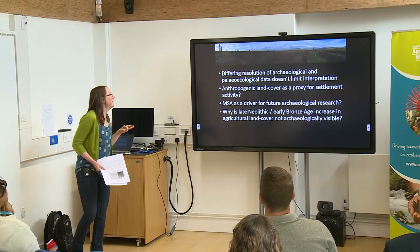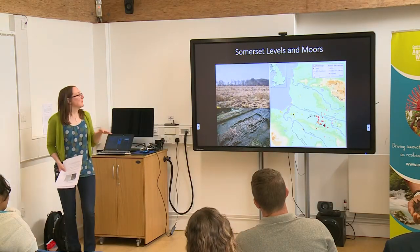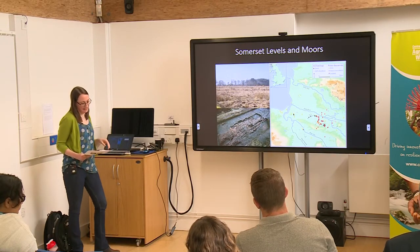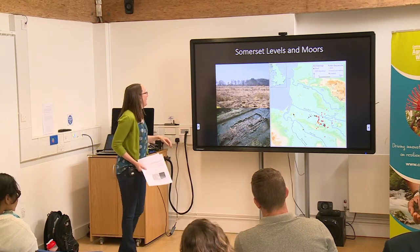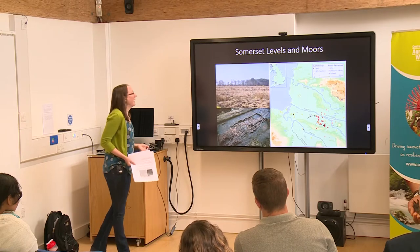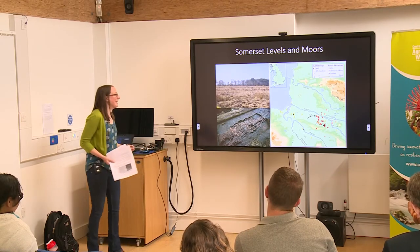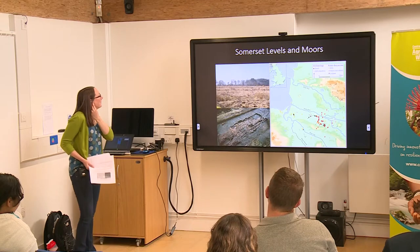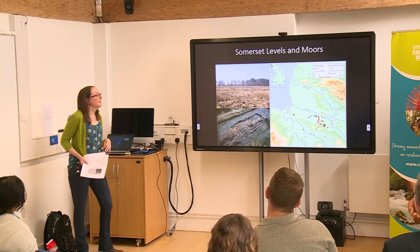As an example of using anthropogenic land cover as a proxy for settlement activity, I'll briefly talk through another case study: the Somerset Levels and Moors in southwest England. This is an area with a lot of archaeological data, but nothing really for settlement. There are lots of wooden trackways crossing the extensive wetlands — presumably because the wetlands provided important resources — but we don't know where people were living or what they were doing. There's also a lot of paleo data from sites like West Tay Moor, a raised bog, so lots of archaeological and paleoecological evidence, but no clear indication of where people actually lived.